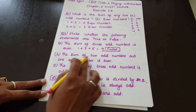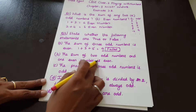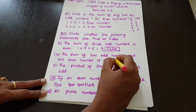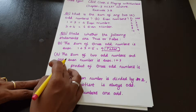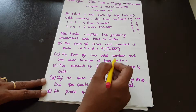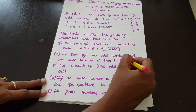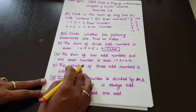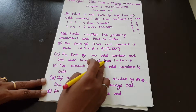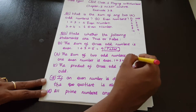Next statement: The sum of 2 odd numbers and 1 even number is even. So, 2 odd numbers: 1 plus 3 equals 4. Then 4 plus 2 (the even number) equals 6. So the result is even. Therefore, the statement is true.